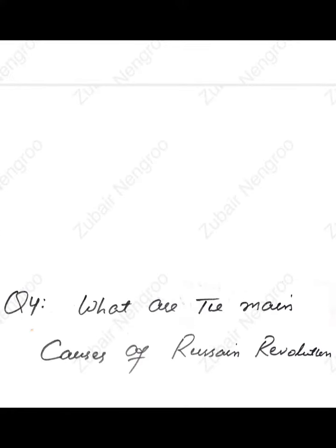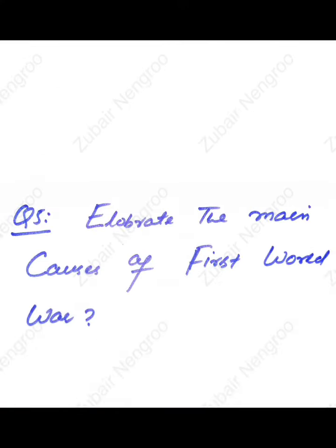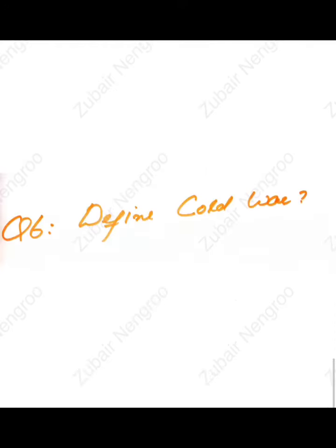Question number four: what are the main causes of the Russian Revolution? Question number five: elaborate the main causes of the First World War. Question number six: define the Cold War. So this was all about the guest paper of History for BG post semester students. Thank you for your cooperation.